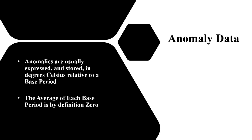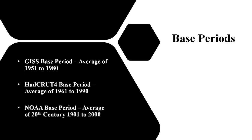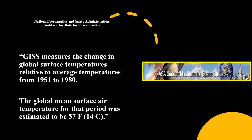Anomalies are usually stored in degrees Celsius relative to a base period. The average of each base period is by definition zero. The GISS base period is the average of 1951 to 1980. The HadCRUT4 base period is the average of 1961 to 1990, while the NOAA base period is the 20th century average, that is 1901 to 2000. How to align these different base periods will be demonstrated.